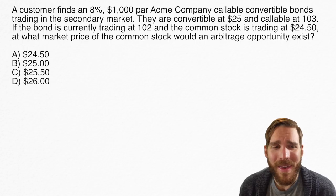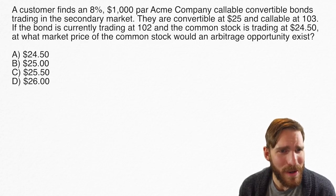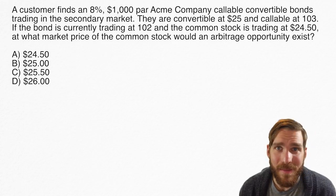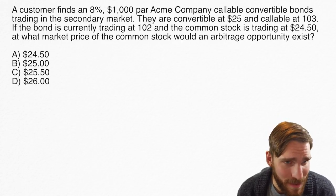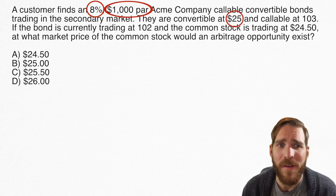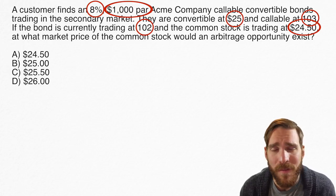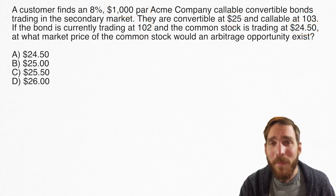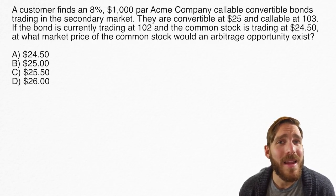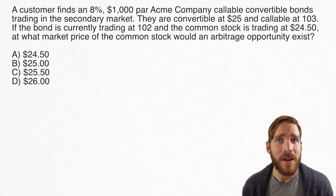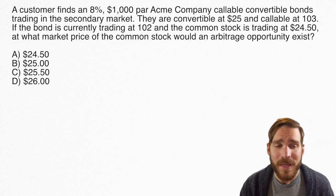We have a longer convertible bond question, but this is a fairly common type. There's a lot of information here: 8%, $1,000 par, convertible at $25, callable at $103, trading at $102, common stock trading at $24.50. With questions like this, there's a lot of noise — information we're just not going to use that they put in there to confuse us.